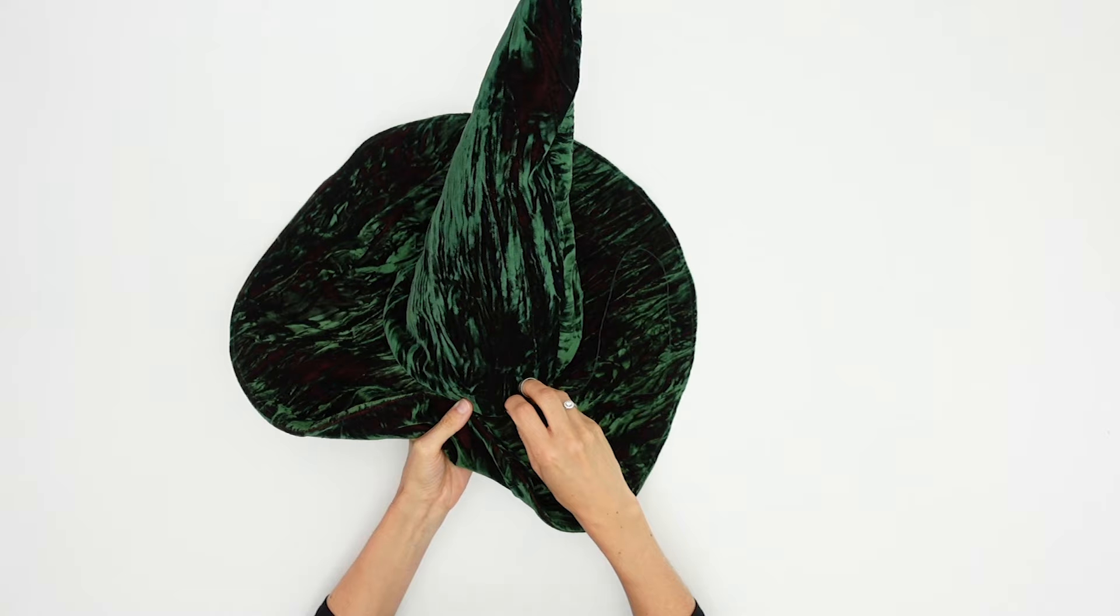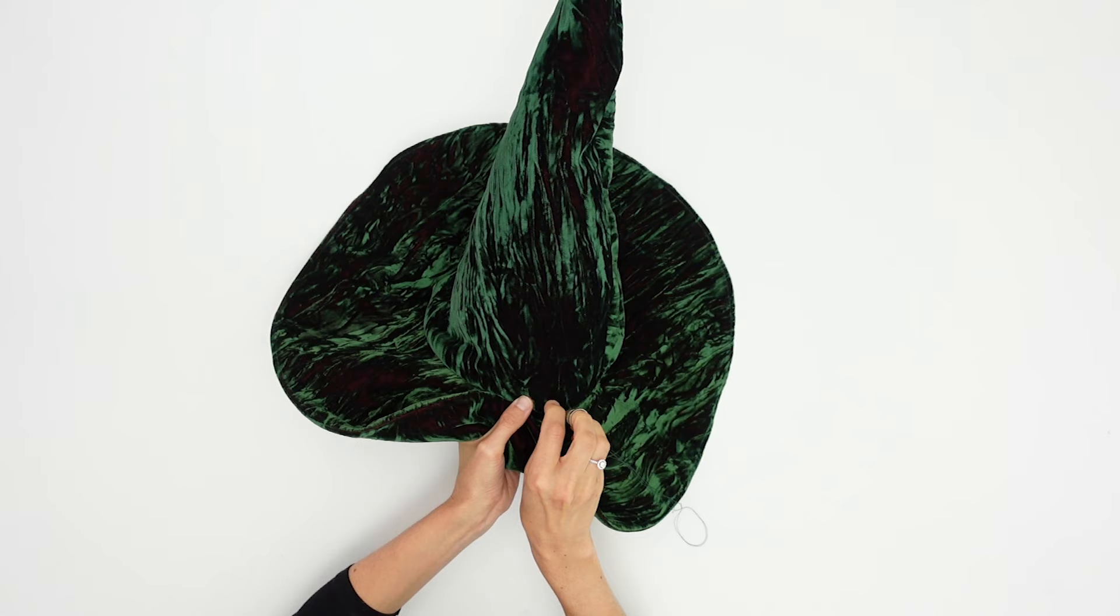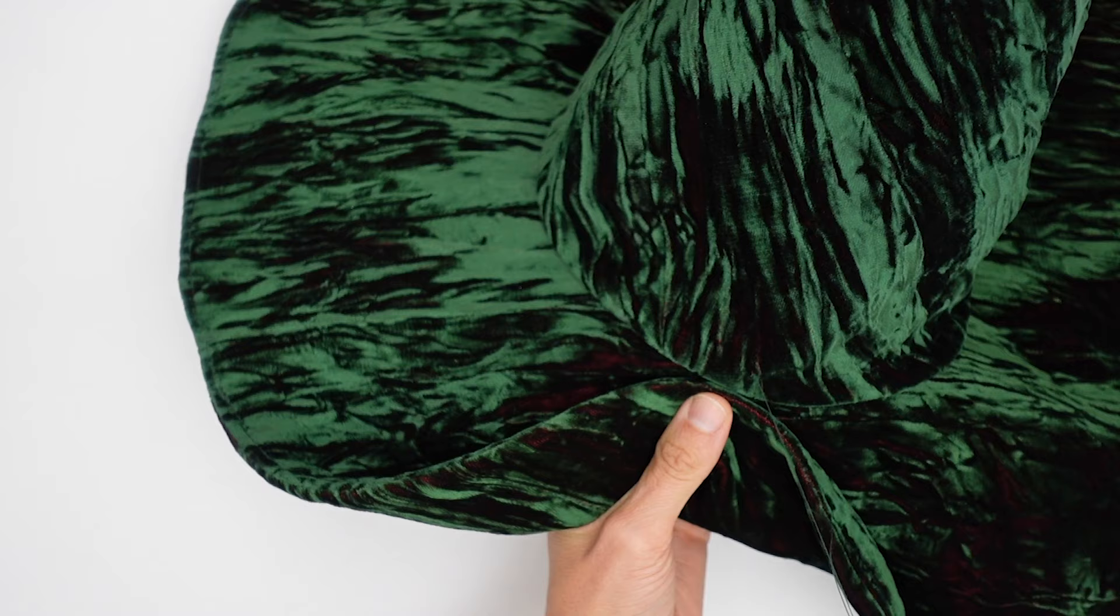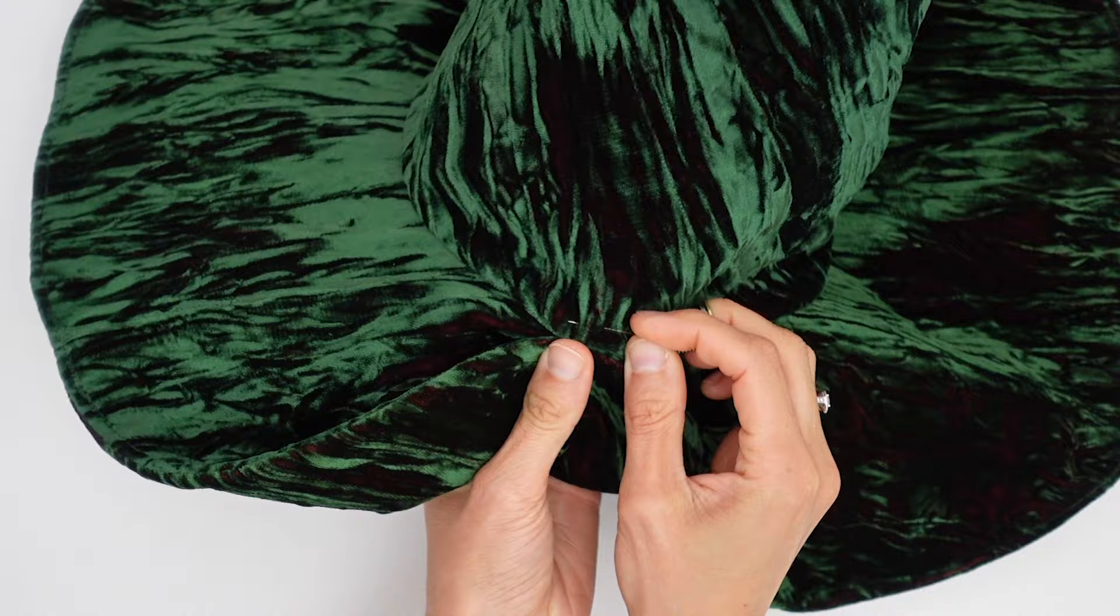So let's proceed, shall we? We are going to stitch all around the base of the hat, making sure to grab all the layers together, which will firmly hold the lining inside where it belongs.